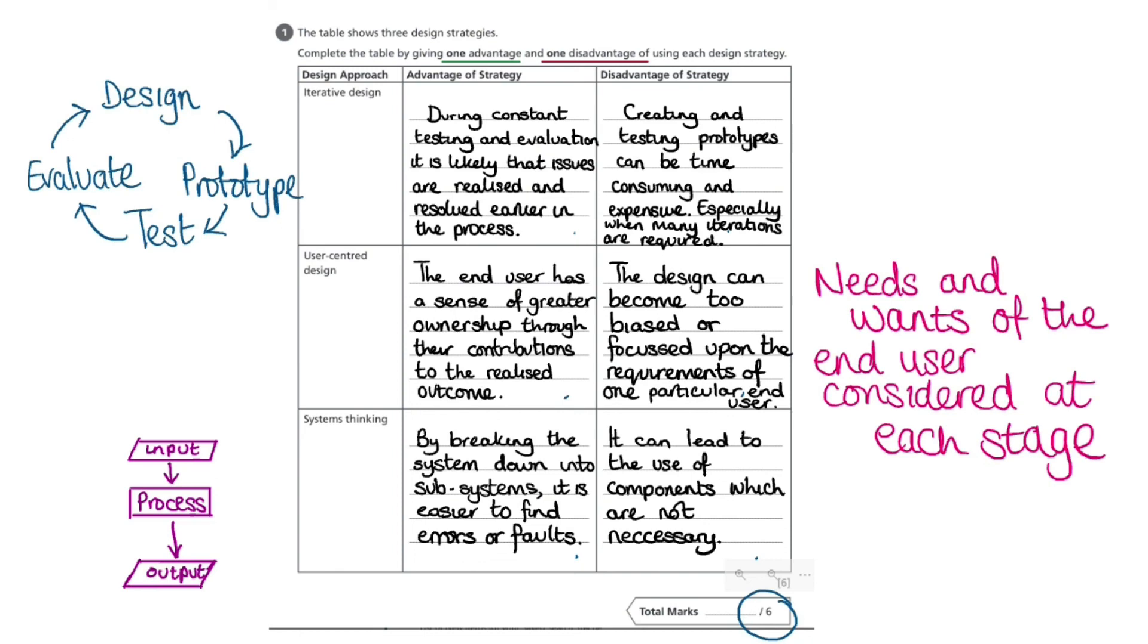There we go. We have our six answers here, which are all worthy of a mark. There may have been other answers that you could have given too, which might be just as credit worthy. However, it's worth considering that although we have only been asked to give one advantage and one disadvantage of using each design strategy, if you can also try to explain your answer a little, like we've done in this example, it means that the examiner can really seek to understand what you are trying to say and why. And this can make the difference between being awarded the credit where it is due and not.